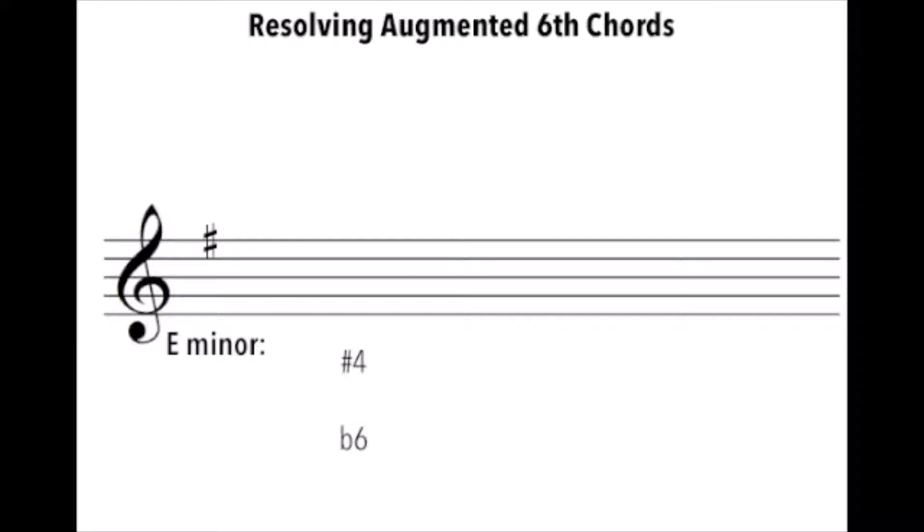They also share scale degree one, but that isn't important right now. In the key of E minor, sharp four is A sharp and flat six is the note C.